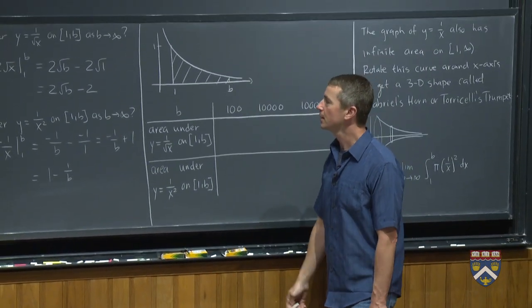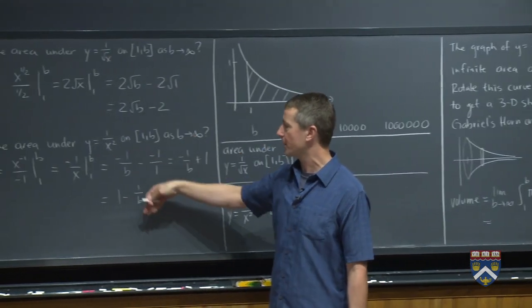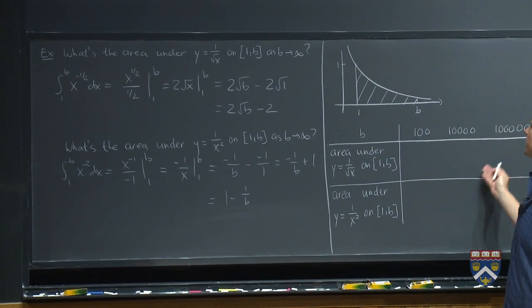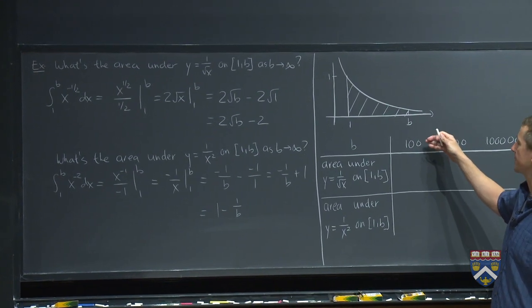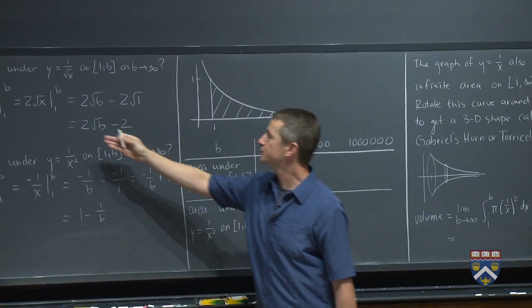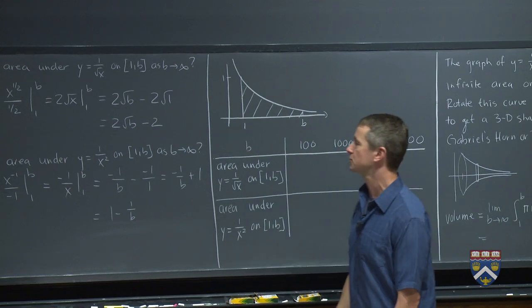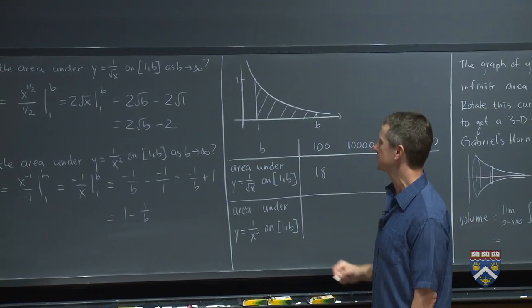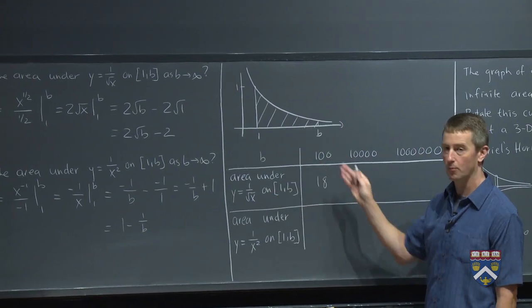Both of the graphs look like this. We found formulas for figuring out their areas up to b over here. So let's evaluate it at a few places where the numbers happen to work out pretty cleanly. If I plug in 100, two square roots of 100, that's 2 times 10, that's 20, minus 2. So we get 18 units under this graph from 1 to 100.